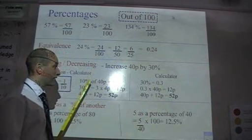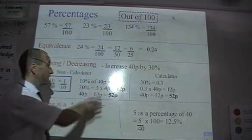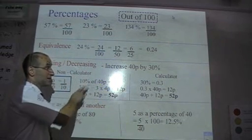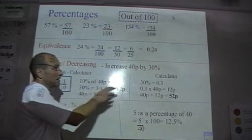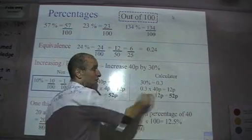So, non-calculator, find 10% by dividing by 10, and then adjust. If you want 5%, half it, 20%, double it. Calculator, change your percentage to a decimal, and multiply it by the amount.